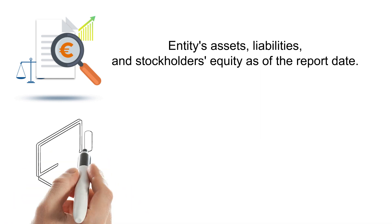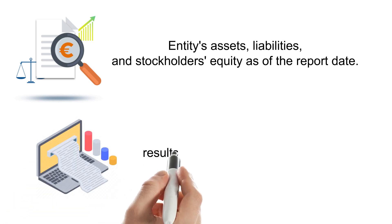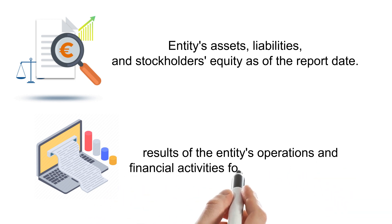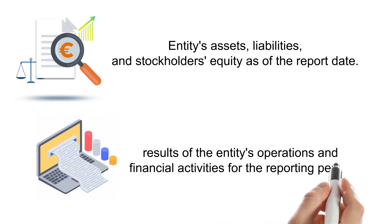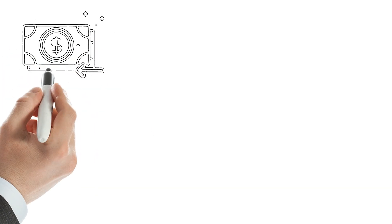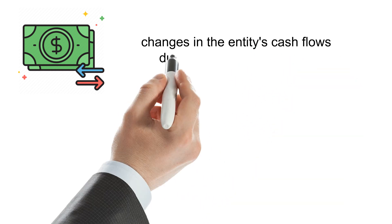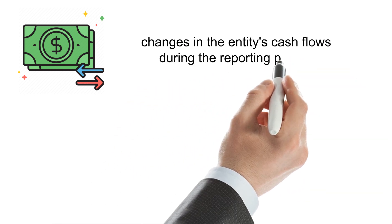The income statement shows the results of the entity's operations and financial activities for the reporting period — this is how it differs from a balance sheet. It includes revenues, expenses, gains, and losses. The cash flow statement shows changes in the entity's cash flows during the reporting period.